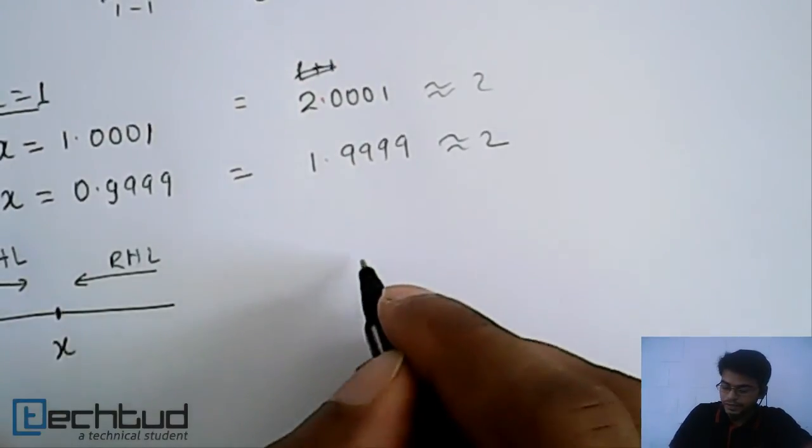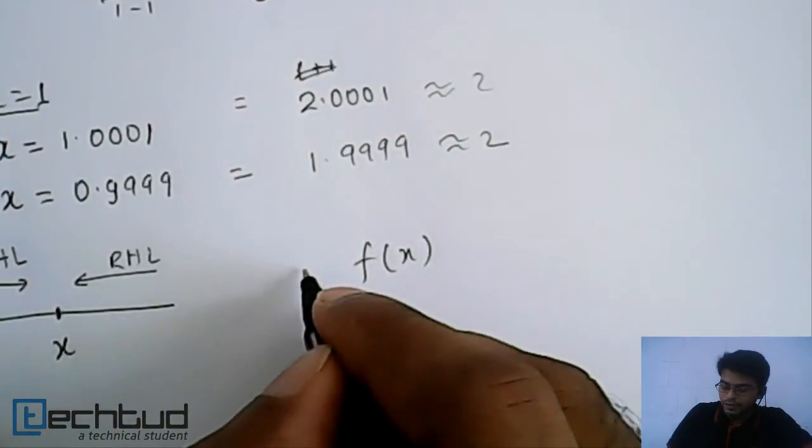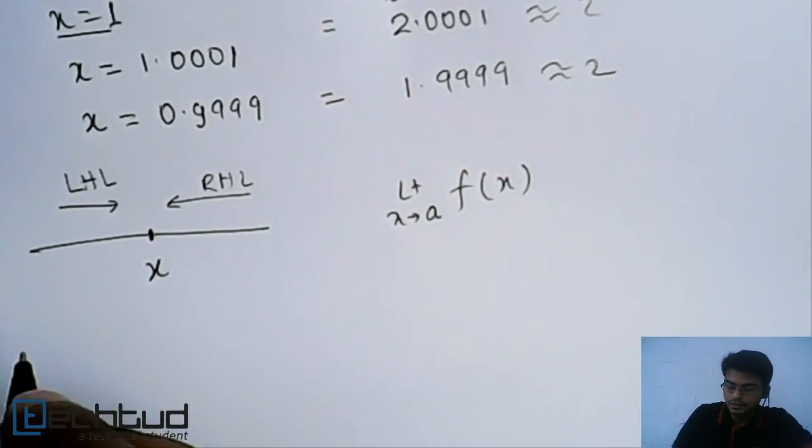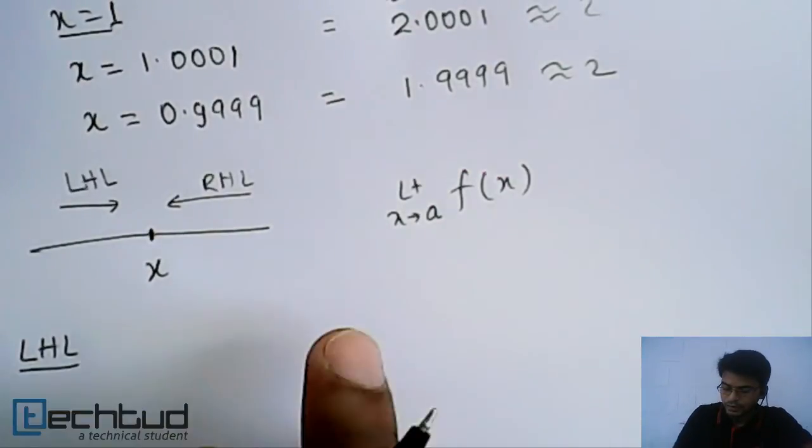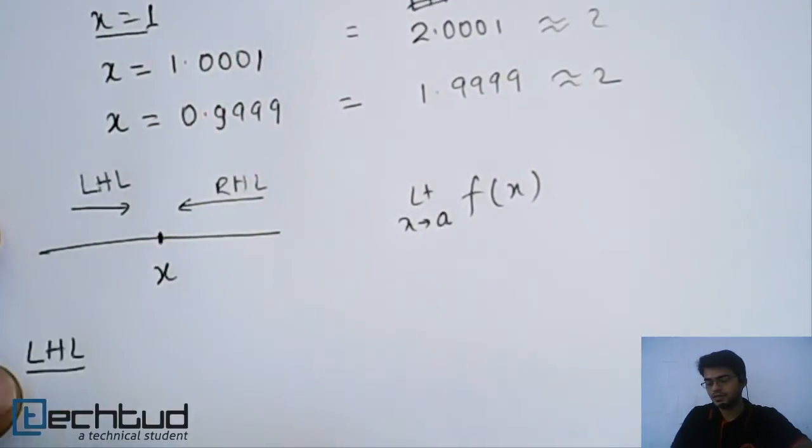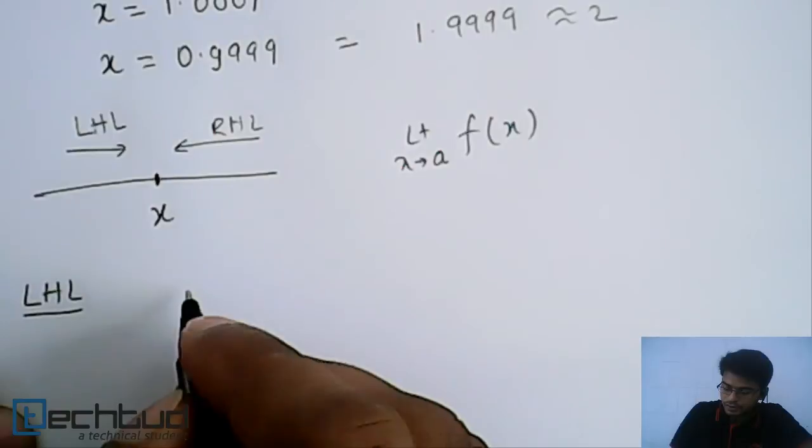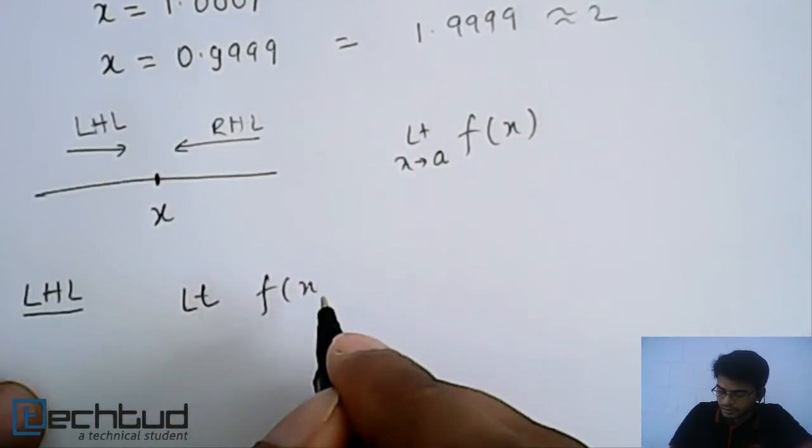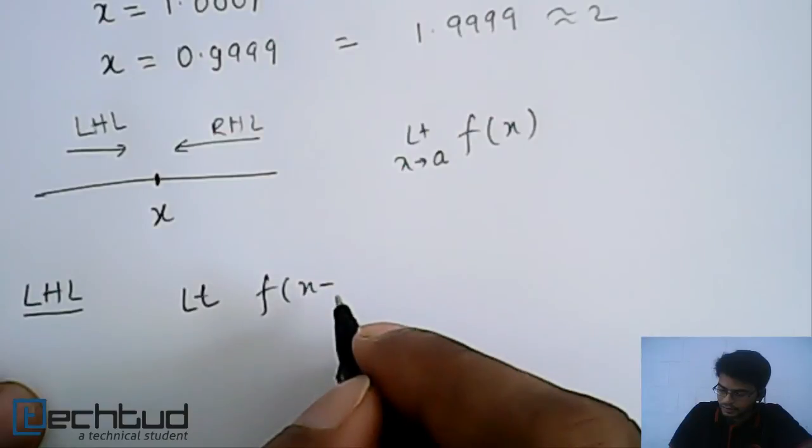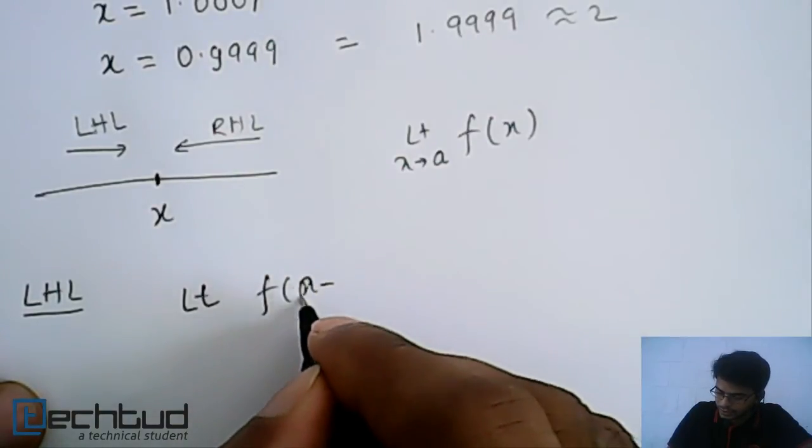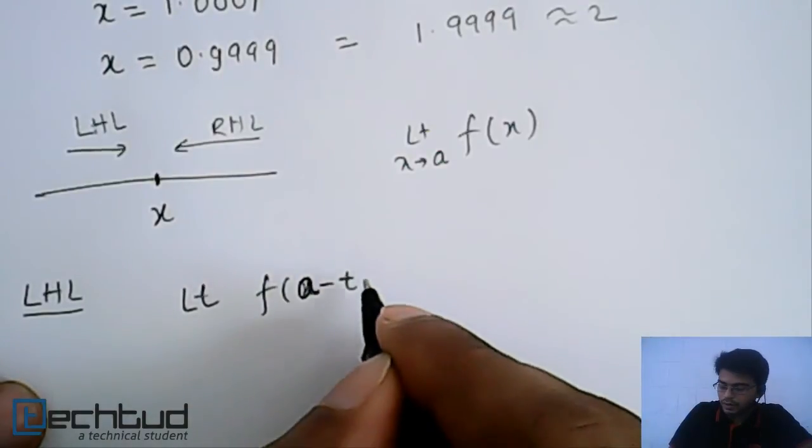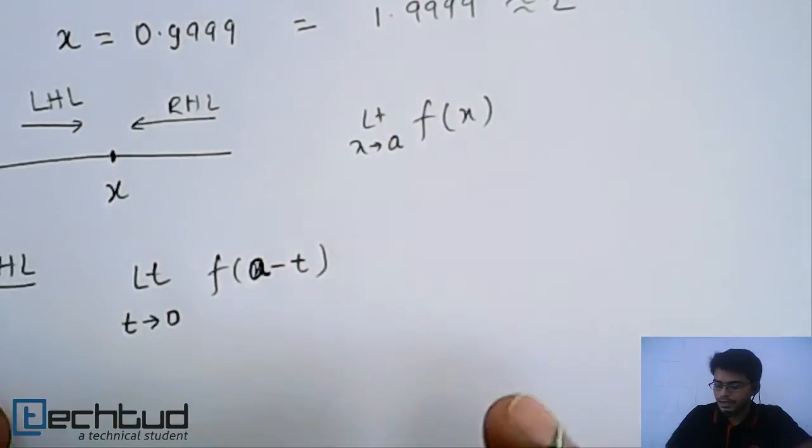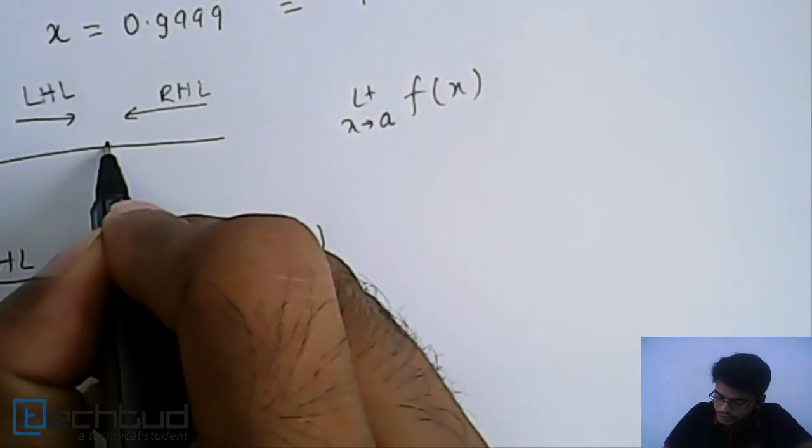So what do we do basically if somebody tells you that find f(x) when limit x tends to some a? So when we have to find this left hand limit, what do we do? We choose a point which is just before this point, just left to this point. So how do we choose this? We take limit of f(x) at a minus t, where t tends to 0.